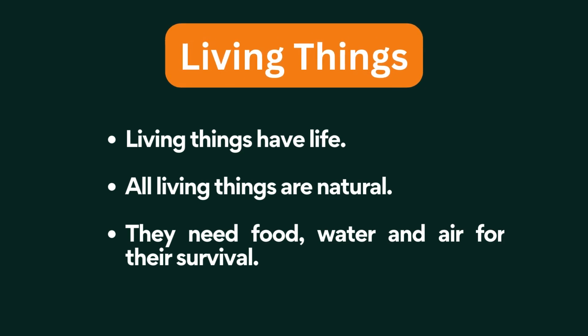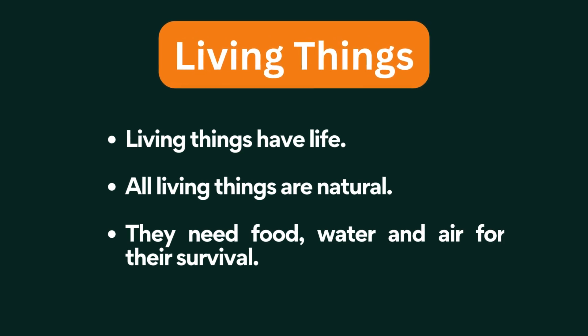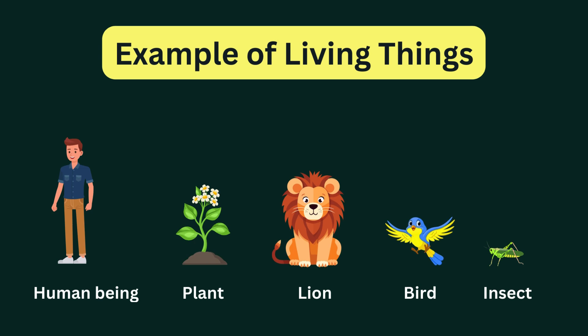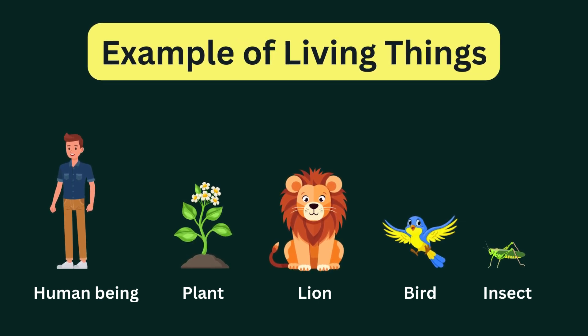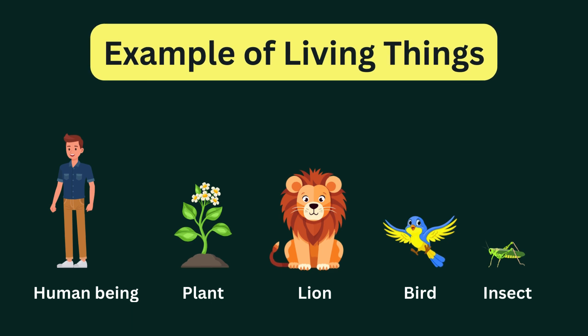First, we see living things. Living things have life. All living things are natural. They need food, water, and air for their survival. Examples of living things: human being, plant, lion, bird, insect. They all have life.